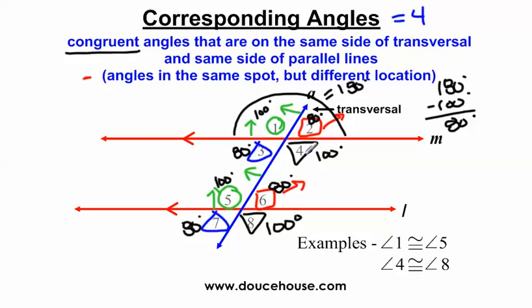So if you know one angle whenever we have parallel lines, using these angle relationships you can figure out what all the other angles are, which is why it's very useful to know all these angle relationships.